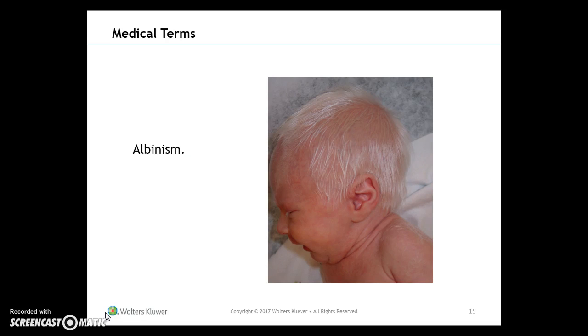Here is a picture of albinism, which is a group of inherited disorders characterized by a deficiency in pigment in the skin, hair, and eyes.